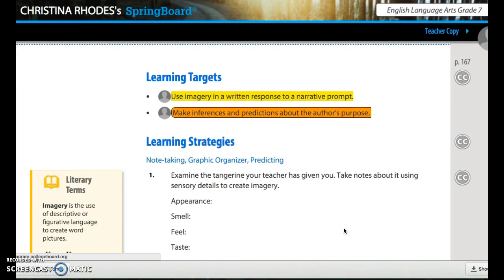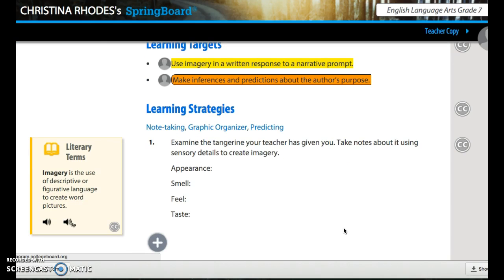Examine the tangerine your teacher has given you. Take notes about it using sensory details to create imagery. Now, the teacher is going to put you in groups of five. So you're going to form a table with five people. She's going to number you off. Five people in your group.